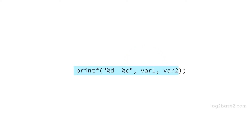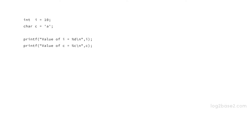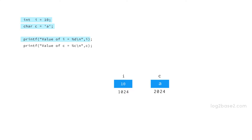Let us see this code here. First, we have the integer variable declaration for i, and i is initialized to 10. Next, we have a character variable c created and 'a' stored in it. Now, we have a printf function and it will print "value of i equal to", and in position of the format specifier %d, it will take the value from variable i which is 10. So "value of i equal to 10" will be printed.